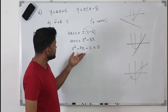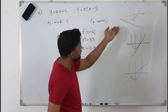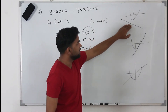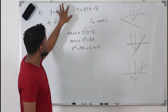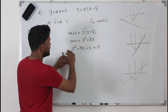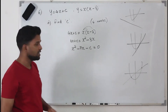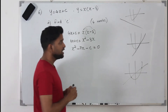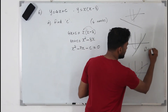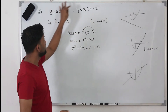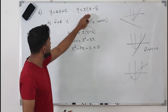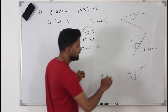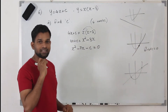We use the discriminant to determine whether the line intercepts the parabola or not. We take the equation of the line and the parabola, combine them, and form a quadratic equation. We take the discriminant of this combined quadratic equation. If the discriminant equals 0, the line just touches the curve at exactly one point.